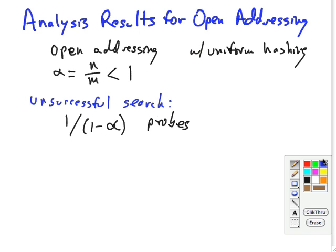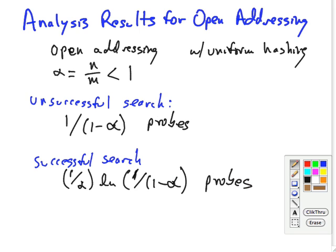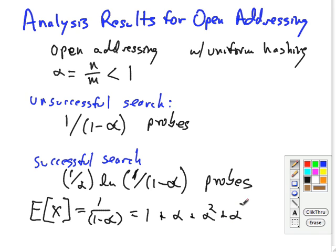Now what about successful search? This one's a little bit more complicated. And the result is 1 over alpha times the natural log of what we just had over there for a successful search. And this is under the assumption that each key in the table is equally likely to be searched for. There's a nice little piece of this proof. If you read the proof in the book, you'll find one part where they say the expected value of the searches of the probes for this is 1 over 1 minus alpha, which is equal to 1 plus alpha, plus alpha squared, plus alpha cubed, plus.